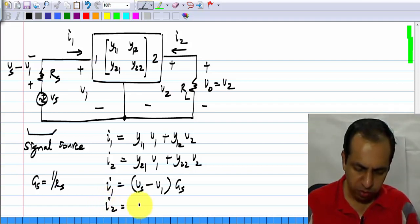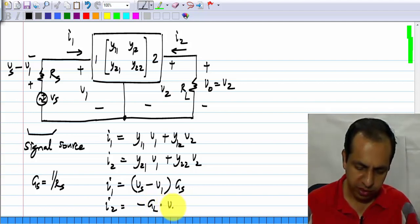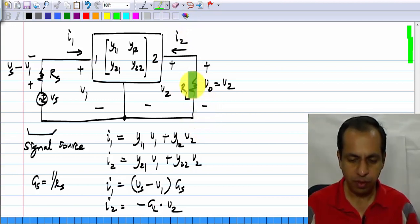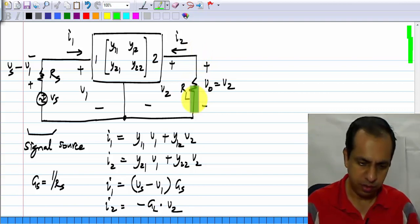What do we have? I2 will be equal to minus GL times V2. This comes about because I2 is flowing in the upward direction.